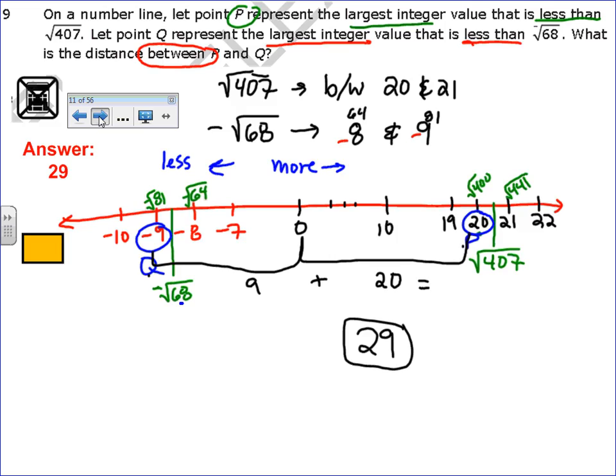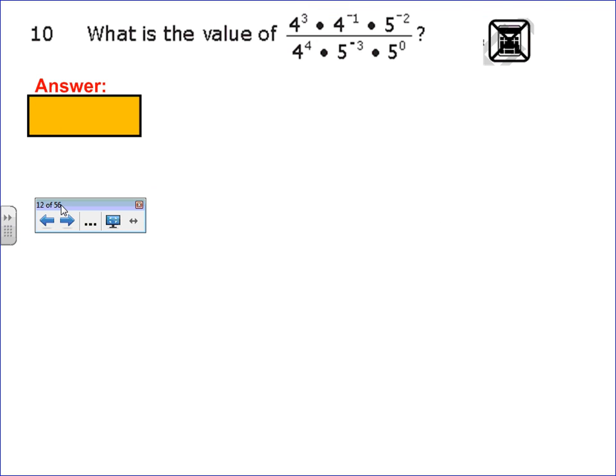One more for this video. It says, what is the value? And they want you to simplify this operation. No calculator. There's lots of different steps that you could choose to do first. I always like to get my negatives out of the way. Now remember what we said, that if they're negative, they're unhappy, they want to be moved. Where can they go? To the opposite location.